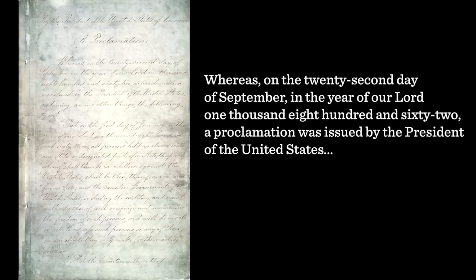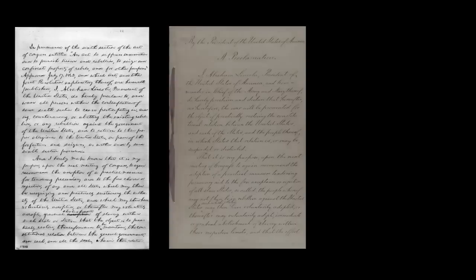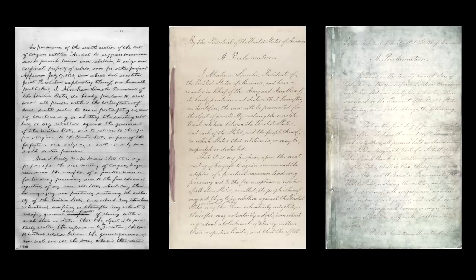He begins by quoting an earlier proclamation: 'Whereas on the 22nd day of September in the year of our Lord 1862, a proclamation was issued by the President of the United States.' So the first and most important teaching point about the proclamation is that it is basically the third and final draft. There were three major drafts of Lincoln's Emancipation Proclamation. The first draft was read to his cabinet in private on July 22nd, 1862, about six months earlier.